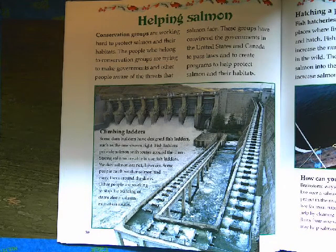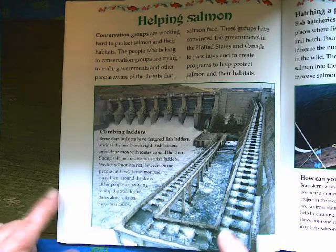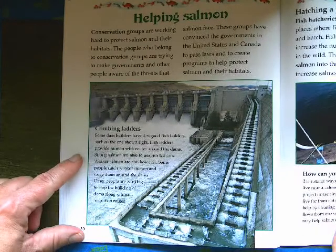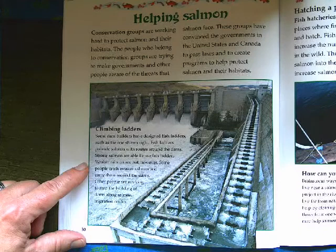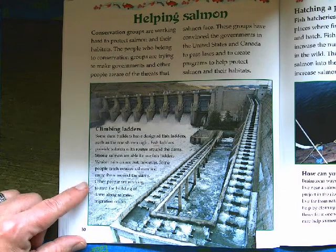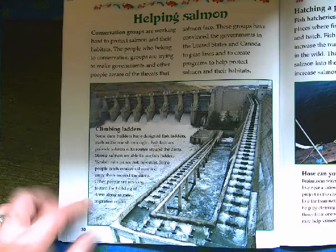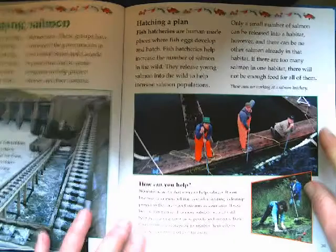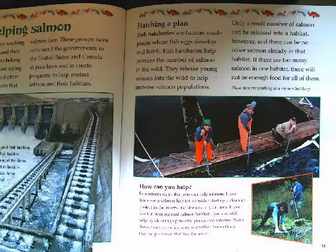Helping salmon: conservation groups are working hard to protect salmon and their habitats. They are trying to make governments and other people aware of the threats that salmon face. These groups have convinced the governments of the United States and Canada to pass laws and create programs to help protect salmon and their habitats. Some dam builders have designed fish ladders, which provide salmon with routes around dams. Strong salmon are able to use fish ladders, but weaker salmon are not. Some people catch weaker salmon and carry them around the dams. Others are working to stop building dams along salmon migration routes.